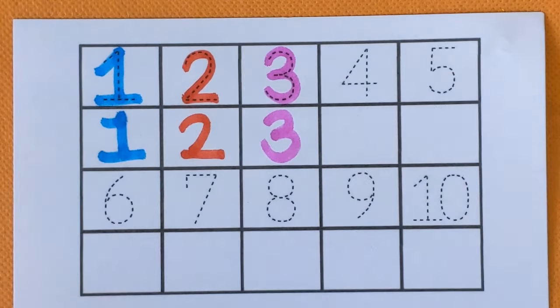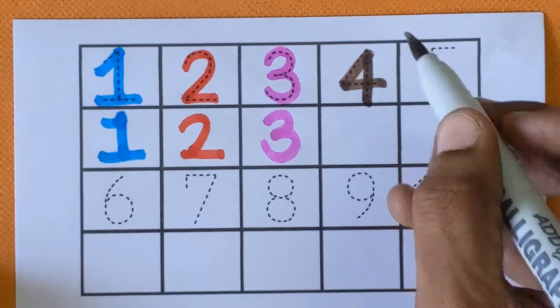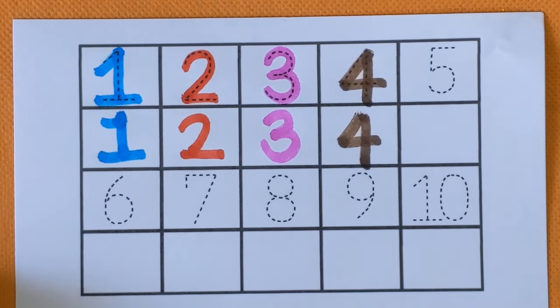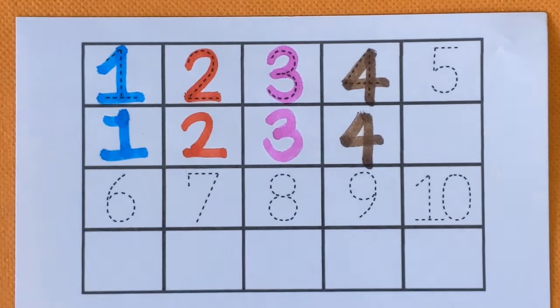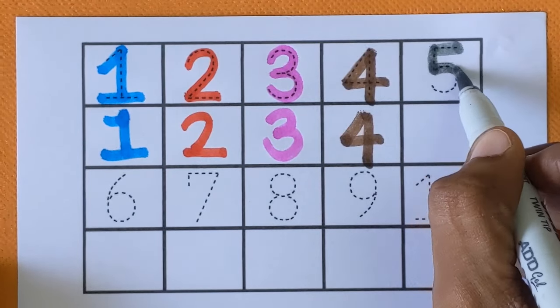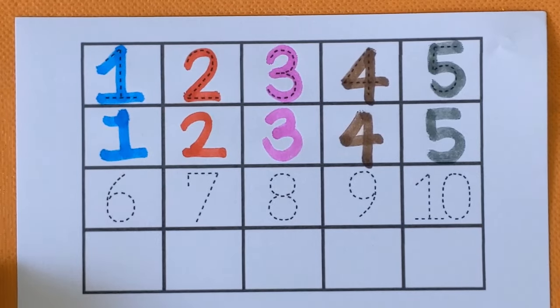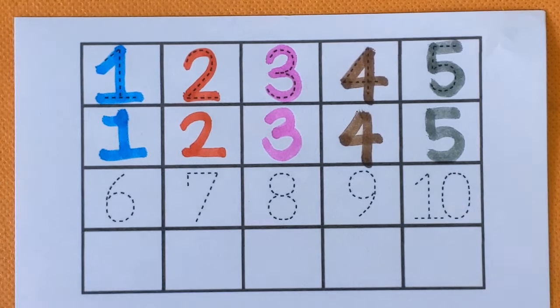After 3, next number is number 4. F-O-U-R. 4. Brown color. After 4, next number is number 5. F-I-V-E. 5. Gray color.